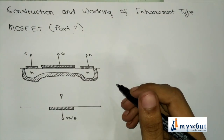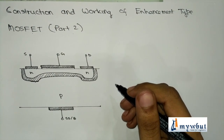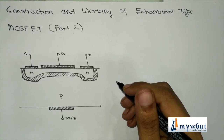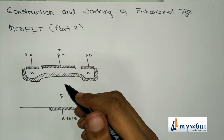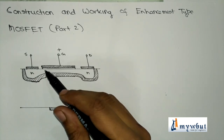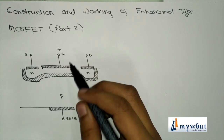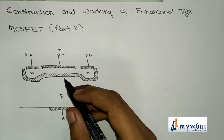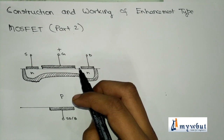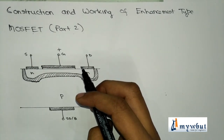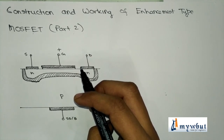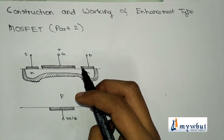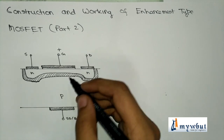In the enhancement type MOSFET, the channel does not exist initially. If we provide a positive potential at the gate terminal, the electrons — the minority charge carriers from the P-type — get attracted towards it by induction. Similarly, immobile ions get uncovered and electrons accumulate at the surface, forming an N-type region where there was initially a P-type region. This process is known as inversion.